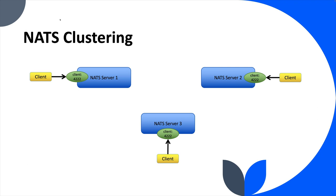We're going to say we have an odd number of NATS servers — not that that's required, but let's go with the example — and we have a third NATS server. We want to do clustering so that messages published on one NATS server can reach clients on another server, and if one NATS server goes down, clients can still work. To do that, the servers communicate on a separate port called the cluster port. By default this is port 6222 for NATS, but you can change it. We configure each server to listen on its cluster port.